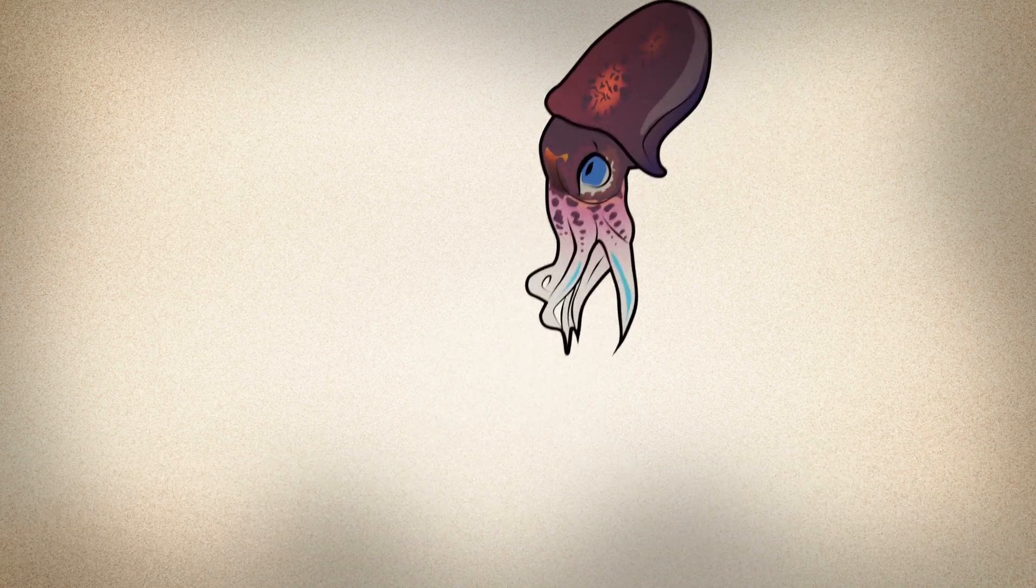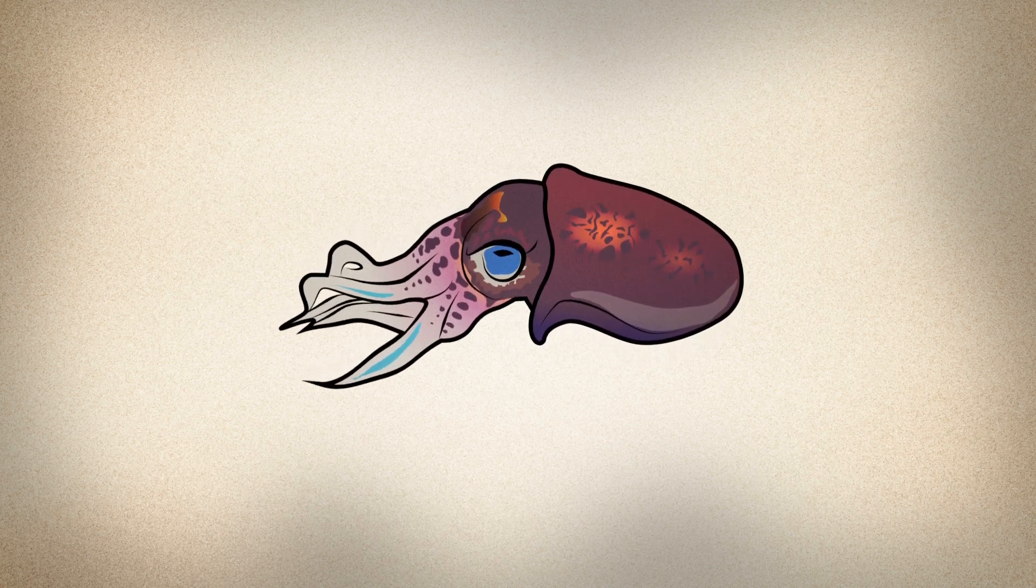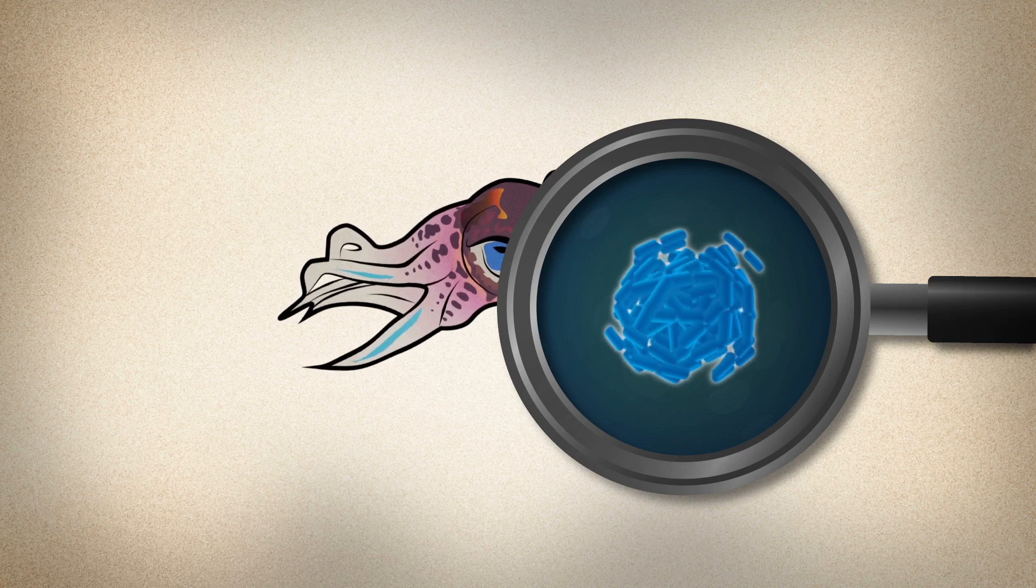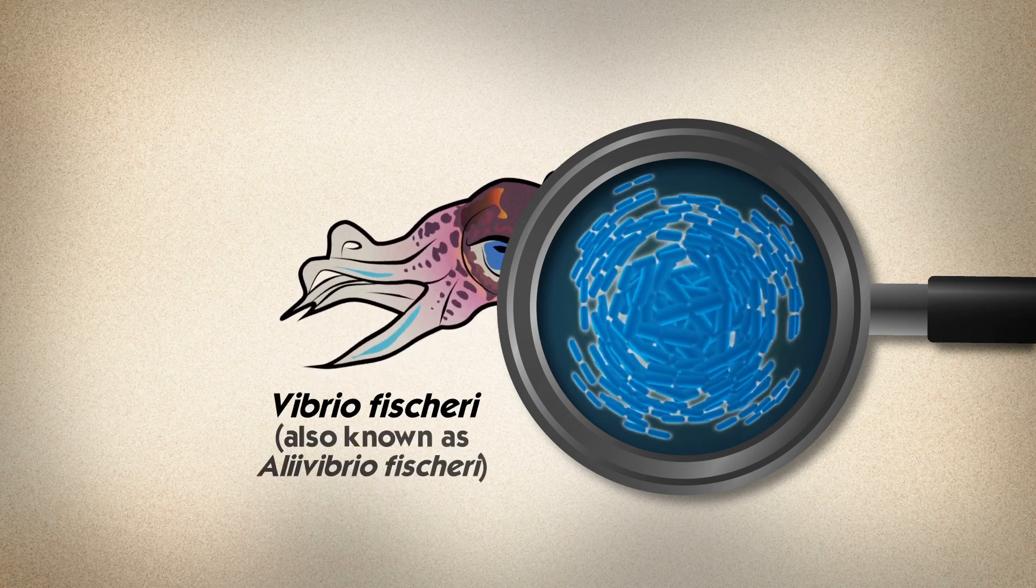To hide itself from predators and prey alike, the squid has its very own invisibility cloak: a colony of a glowing bacterium called Vibrio fischeri, which it houses in a special organ in its mantle.